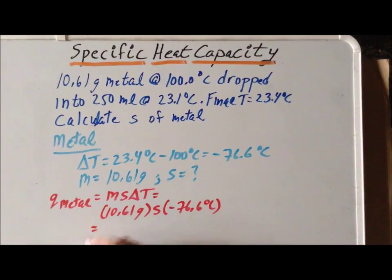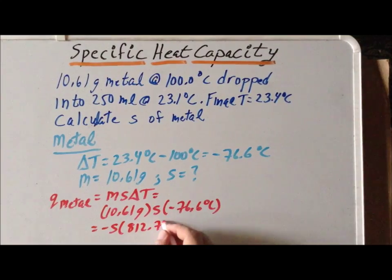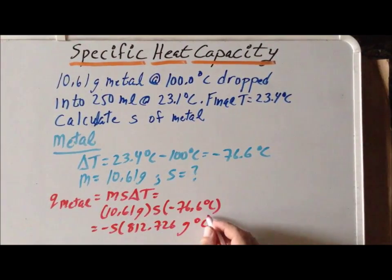So if we combine all those particular terms, we get minus S times 812.726 grams degree centigrade. So that is Q with respect to the metal.